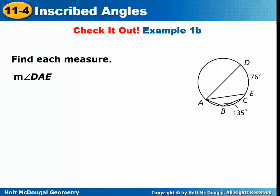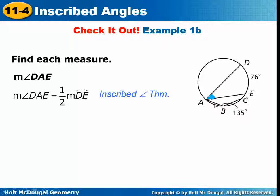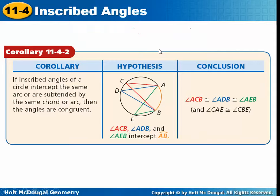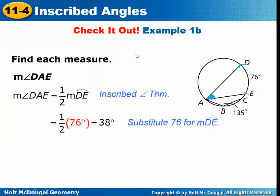Using the same circle, we now want the measure of angle DAE. The measure of the inscribed angle is half of the measure of the intercepted arc. We put in 76 degrees for the measure of arc DE, and half of that is 38. So this inscribed angle is 38 degrees.